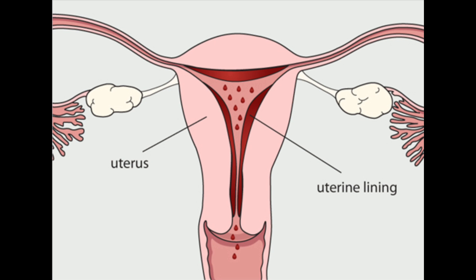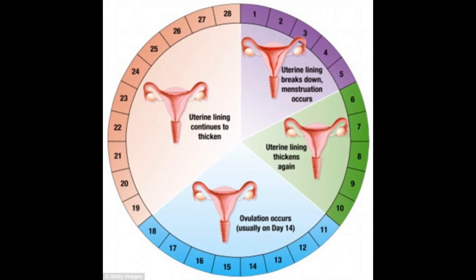After ovulation, still in the ovary, the corpus luteum releases progesterone and a small amount of estrogen. This causes the lining of the uterus to thicken in preparation for pregnancy. If a fertilized egg implants in the lining of the uterus, the corpus luteum continues to produce progesterone to maintain the thickened lining. If pregnancy does not occur, the corpus luteum dies, progesterone levels drop, and the uterus lining sheds again.